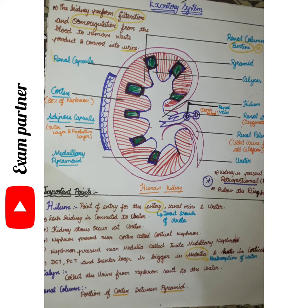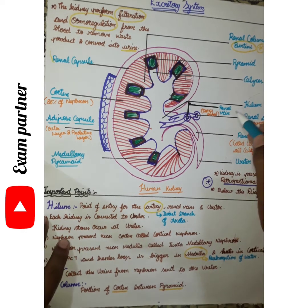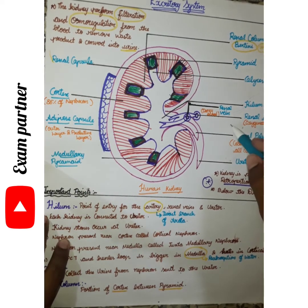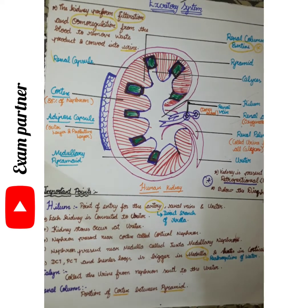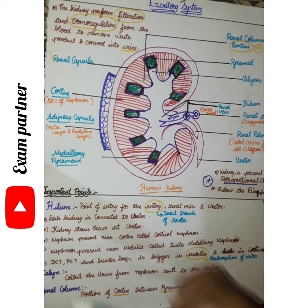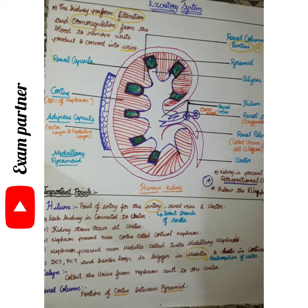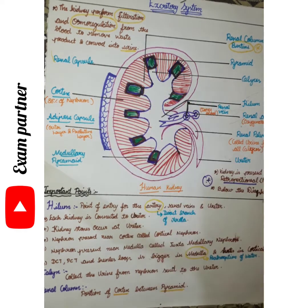Next is the renal pelvis. We will look at the renal pelvis along with the renal vein and the renal artery. The next part is the adipose capsule, which is the outermost protective layer of the kidney. The adipose capsule is distinct from the renal capsule. The renal capsule is the inner layer, while the adipose capsule is the outer layer.